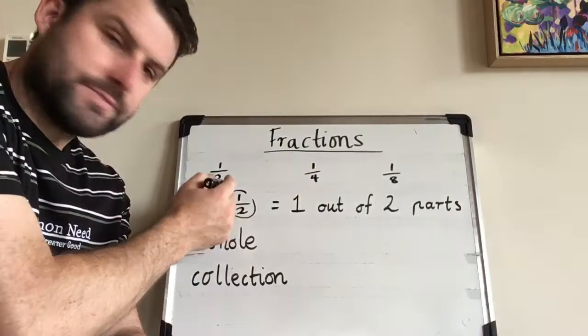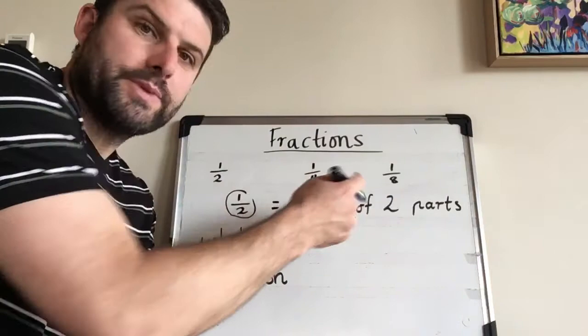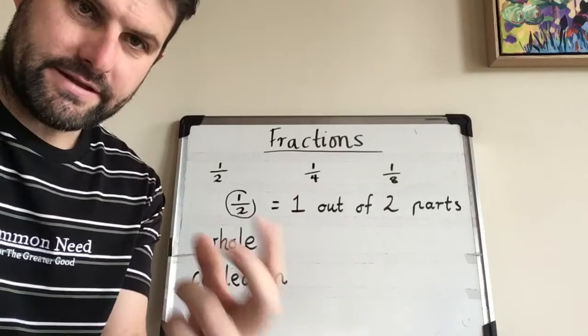One line two. These all have special names, but we'll worry about them later. And one half just means one out of two parts. So you've got one out of two parts.